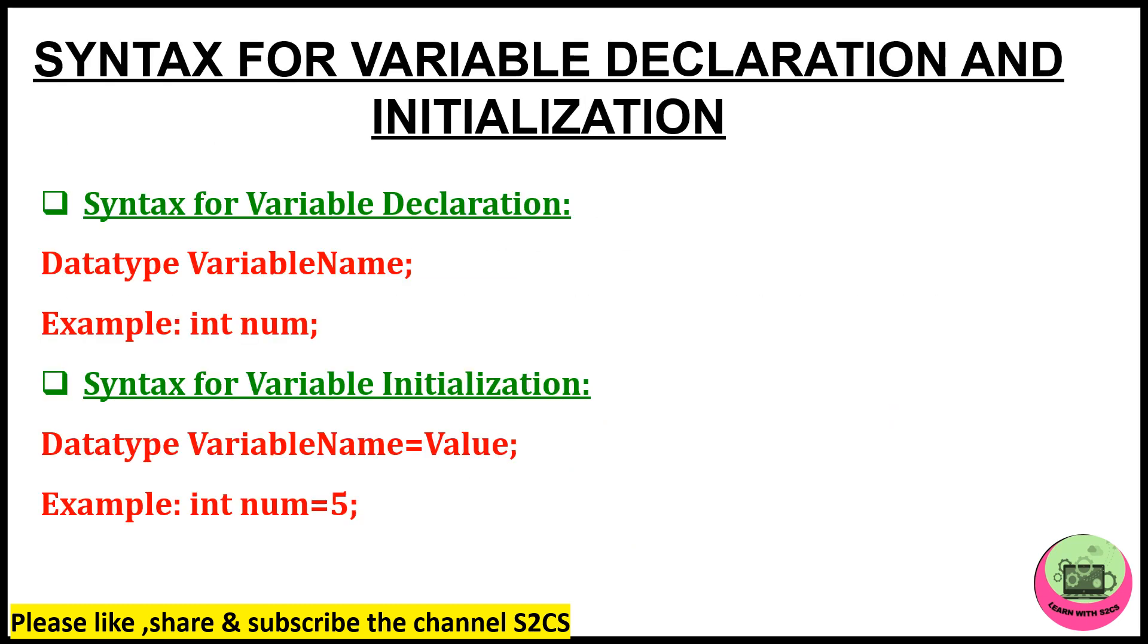Next is the syntax for variable declaration and initialization. How you are going to declare a variable? Data type, variable name. Data type will tell you what type of data you are storing. So your int num—integer data that is of number. So num will be storing the number data. Second, how you are going to initialize? You have declared, but now you are assigning some value to your variable. So data type, variable name is equal to value. Int num is equal to 5.